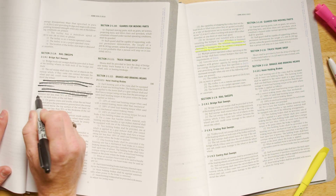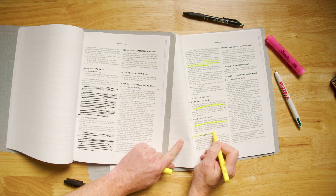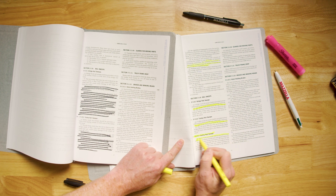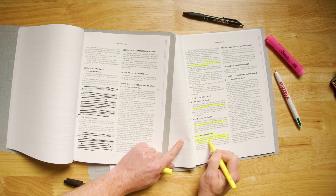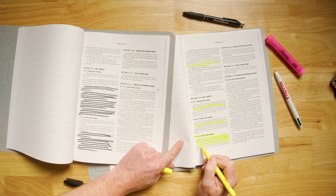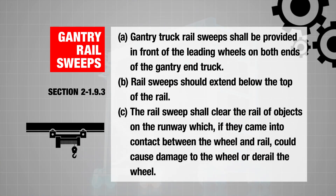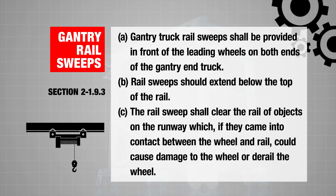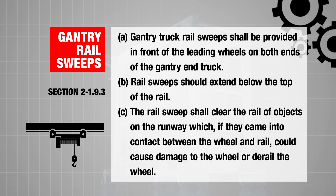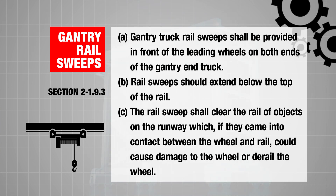A new section has been added specifically for gantry rail sweeps. It states that gantry truck rail sweeps shall be provided in front of the leading wheels on both ends of the gantry truck. Rail sweeps should extend below the top of the rail. Rail sweeps shall clear the rail of objects on the runway which, if they come into contact between the wheel and the rail, could cause damage to the wheel or derail the wheel.